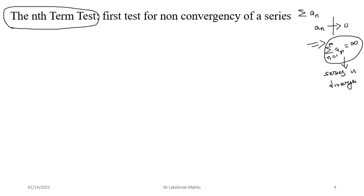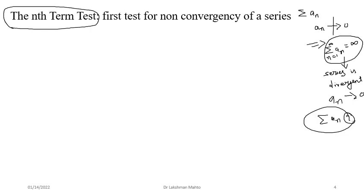But what will happen if the Nth term is converging to 0? Then you can't say anything about whether the series is going to converge or not. The series may converge or may diverge — it is inconclusive in nature. There would be a question mark. We need further advanced tests in order to verify the convergence of the series. The Nth term test is not for establishing convergence of a series; it is just for establishing divergence — when the Nth term is not going to converge to 0, then we can say the series is divergent.